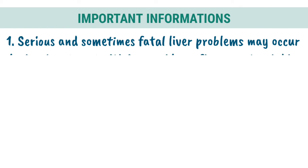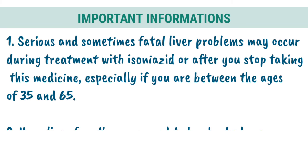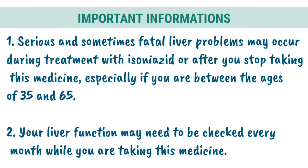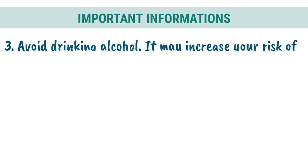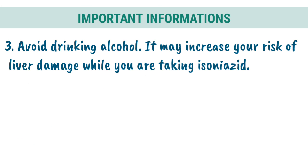Important Information: 1. Serious and sometimes fatal liver problems may occur during treatment with isoniazid or after you stop taking this medicine, especially if you are between the ages of 35 and 65. 2. Your liver function may need to be checked every month while you are taking this medicine. 3. Avoid drinking alcohol, as it may increase your risk of liver damage while taking isoniazid.